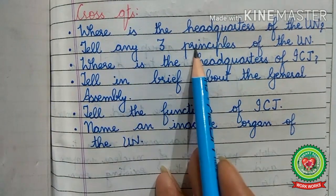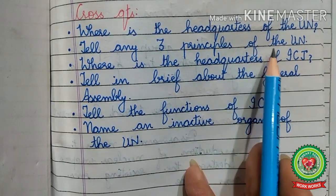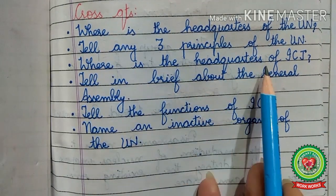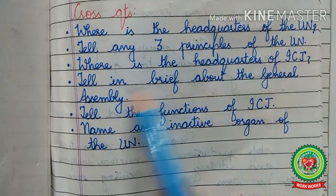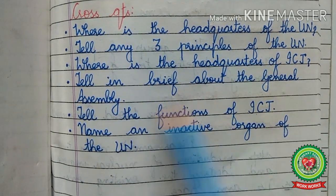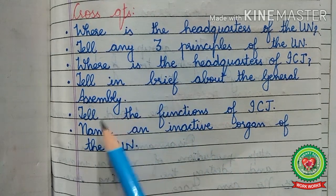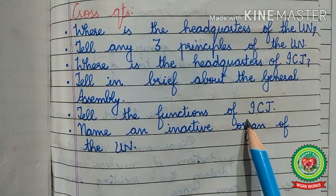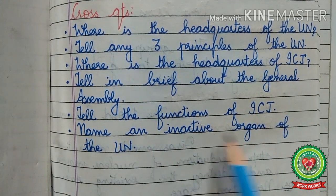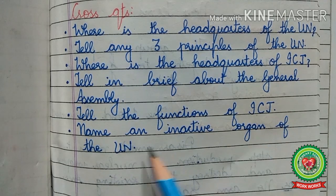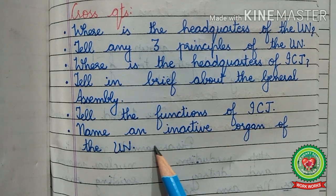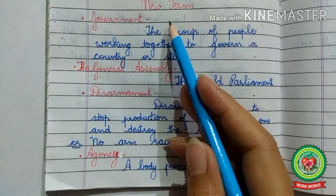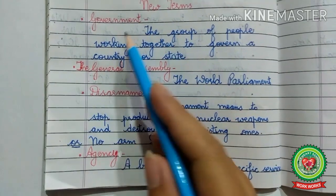Answer these cross questions: Where is the headquarters of the UN? Tell any three principles of the UN. Where is the headquarters of the ICJ? Tell in brief about the General Assembly. Tell the functions of the ICJ. Name an inactive organ of the UN.